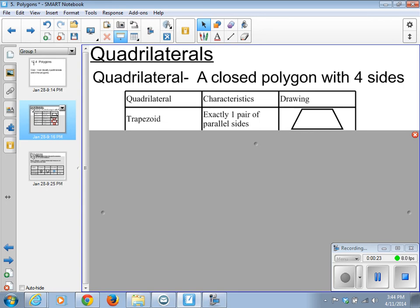We have a trapezoid. This has exactly one pair of parallel sides, which in this drawing are the top and the bottom.